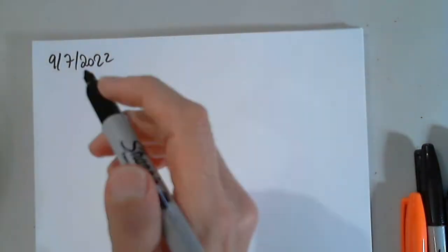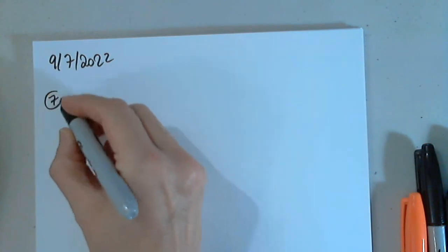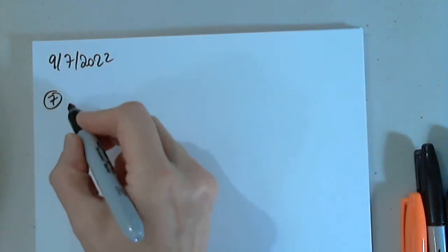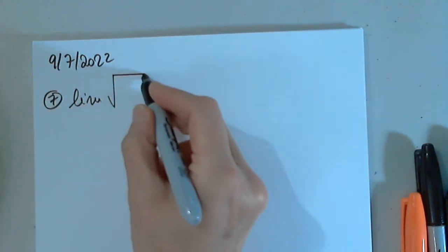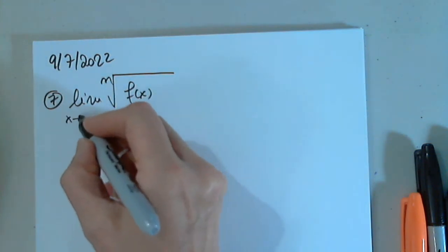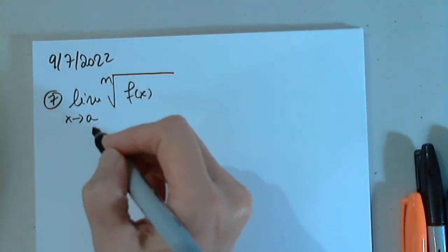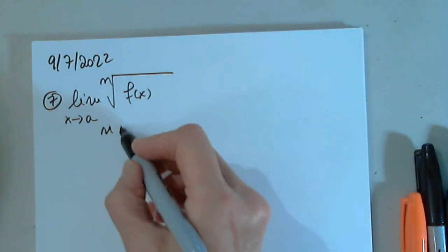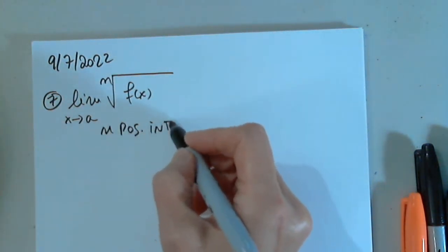And let's see what happens next. So, number 7. And we have limit of the nth root of f of x. Of course, when x approaches a from either side. And n is also a positive integer.